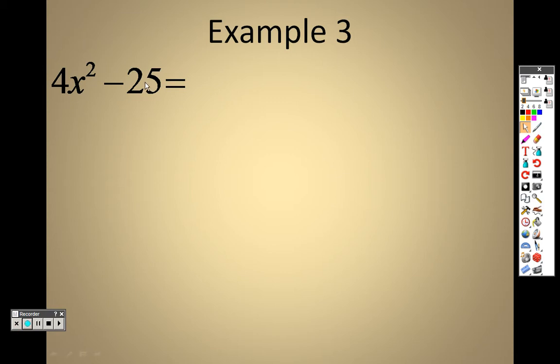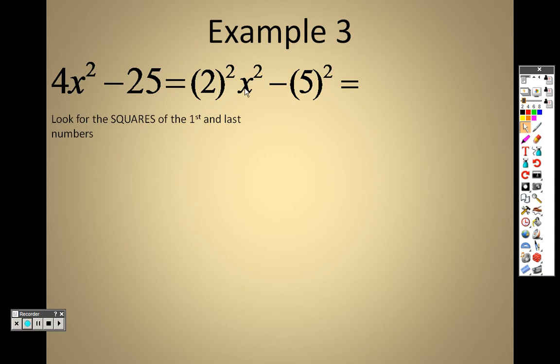What you need to realize is, can something squared give you 25? You betcha, 5 squared. And can something squared give you 4? You betcha, 2 squared. So I can actually combine those two items together to get a 2x squared and a minus 5, because both items are squared and there's no term in the middle. I can take the first term minus the second term and the first term plus the second term to get my answer of 2x minus 5 and 2x plus 5.